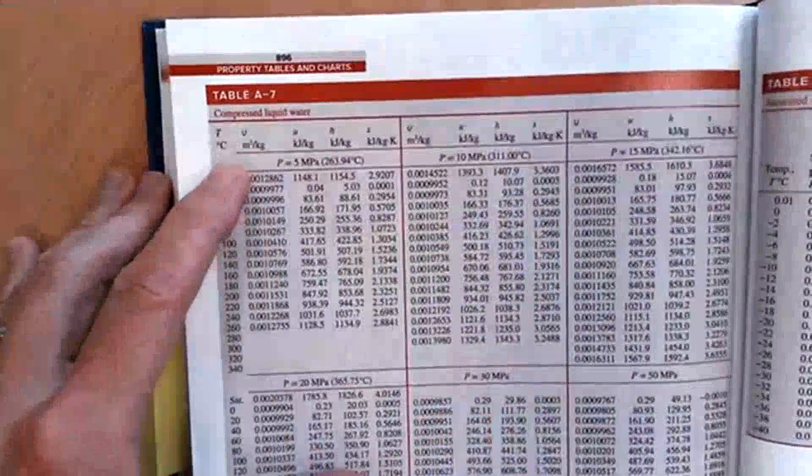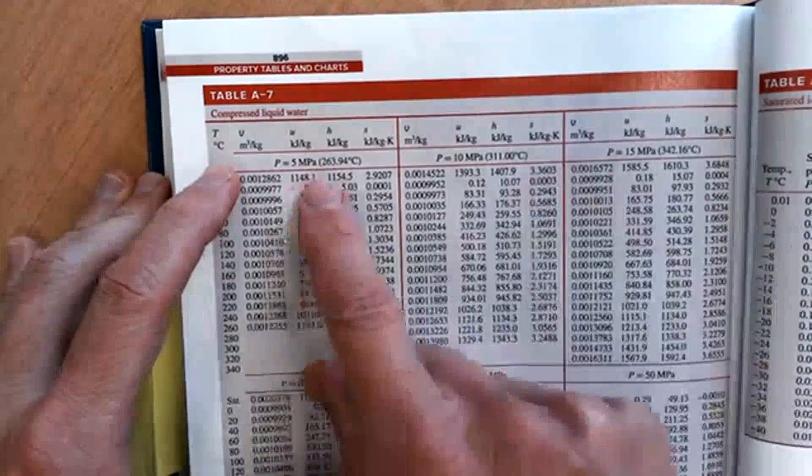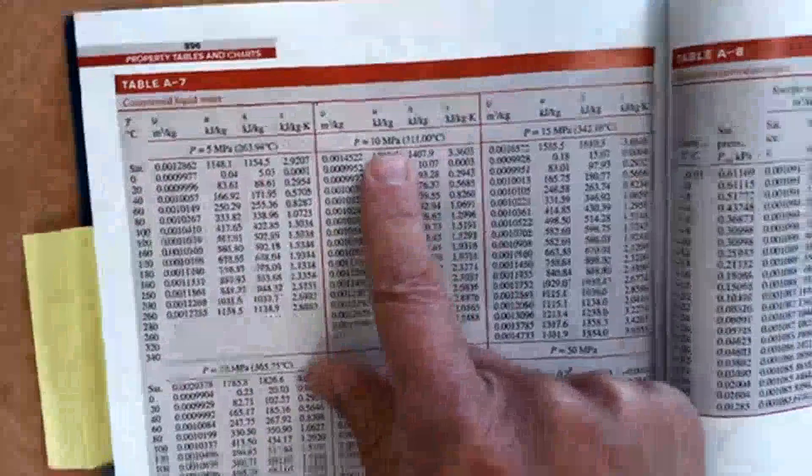So I'm going to flip over. Superheated. Here's the compressed liquid table here. Table A7. So let's see. 10,000 kPa is right here. It's a megapascal.